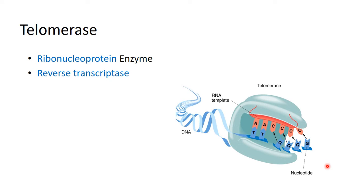Here is the telomerase. Telomerase is a ribonucleoprotein enzyme — it's a protein, shown here in blue, and it contains an RNA sequence, a ribonucleic acid, which is why we call it a ribonucleoprotein enzyme. Its enzyme activity is reverse transcriptase, meaning it copies DNA from RNA — from RNA to DNA — so it's reverse transcription.